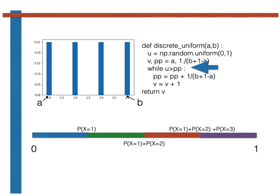If, however, u is greater than pp, then we do not yet know what value the uniform discrete random variable should take. We must therefore continue and test whether it falls within the next of our line segments.